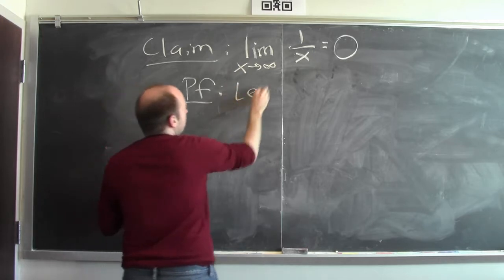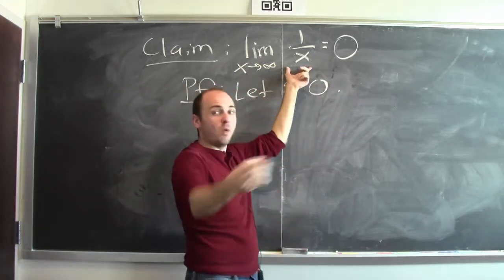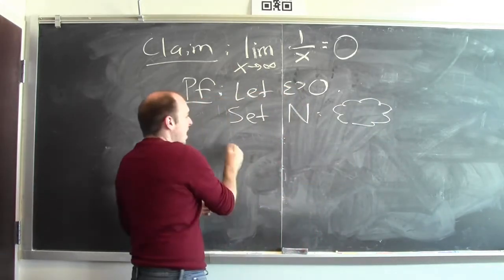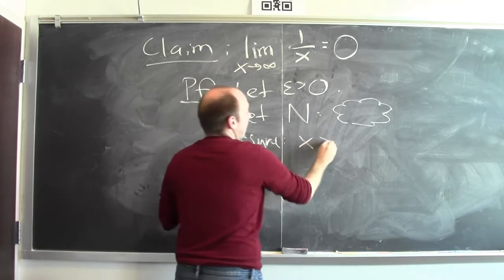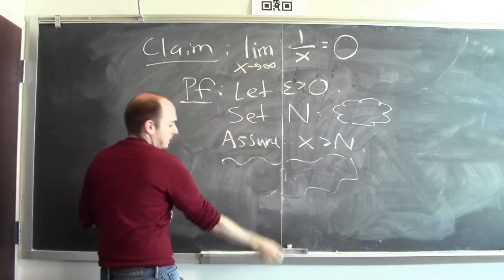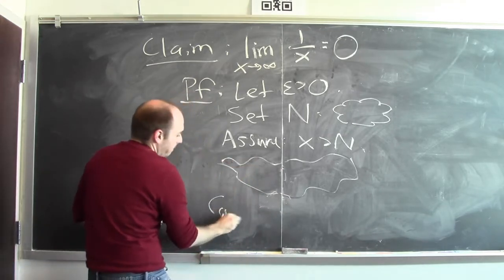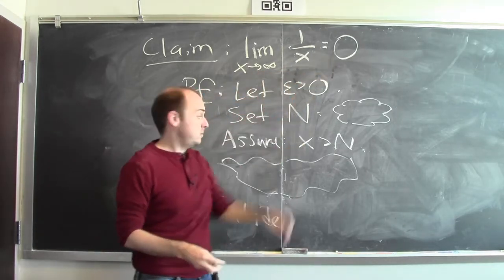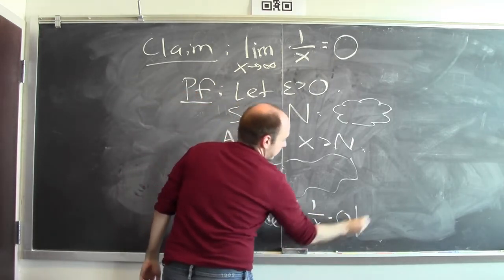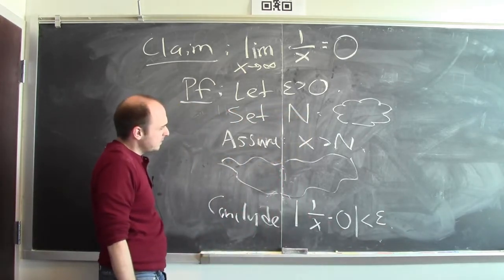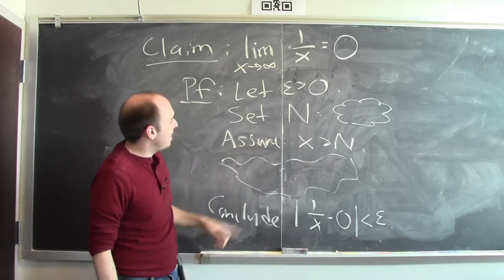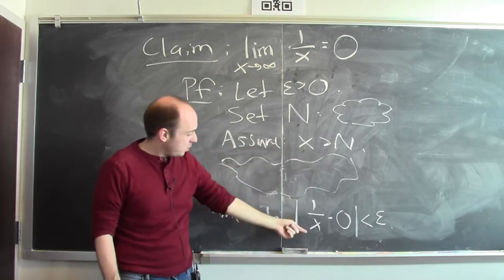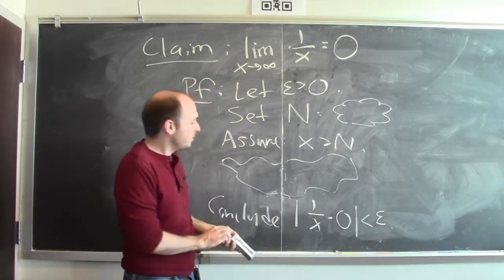So this argument is going to start out: let epsilon be greater than 0 — how close do you want 1 over x to be to 0? Then I'm going to set N equal to some big number. I'm going to assume that x is bigger than N. Something is going to happen. And then I'm going to conclude that f of x, which is 1 over x in this case, is really within epsilon of 0 — that 1 over x minus 0 is less than epsilon in absolute value.